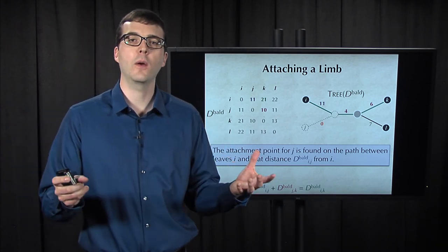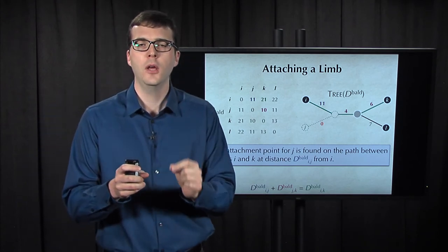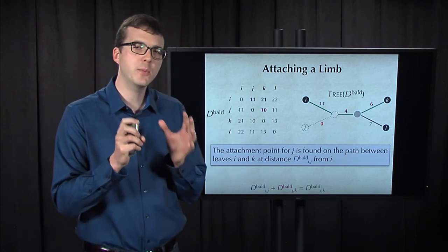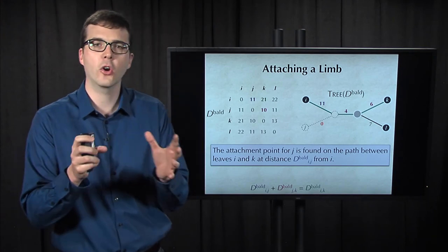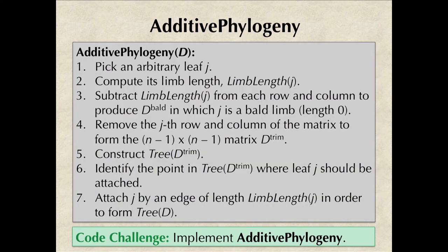So this time the attachment point occurred along an edge of the tree, meaning that we can form a new internal node along that edge at the attachment point. But I want you to note that the attachment point for J could theoretically have occurred at an existing internal node of this tree, in which case we simply need to just join the limb of J onto this existing node. So now that we know how to find the attachment point, you should be ready to implement additive phylogeny for yourself.